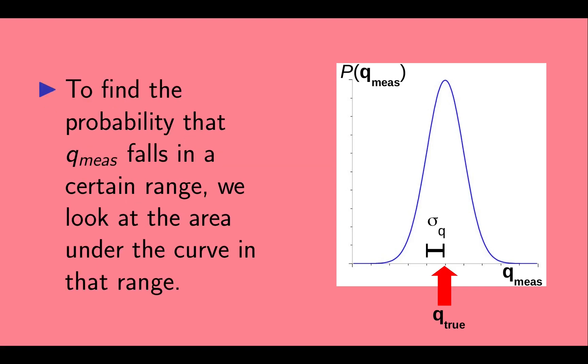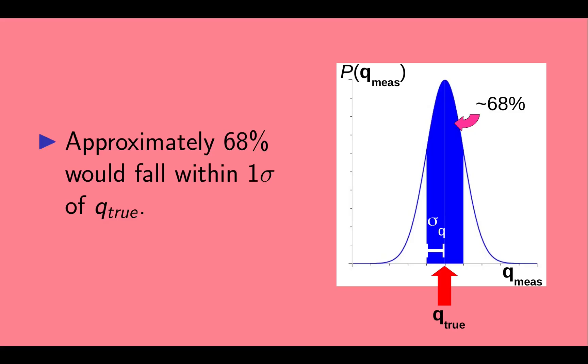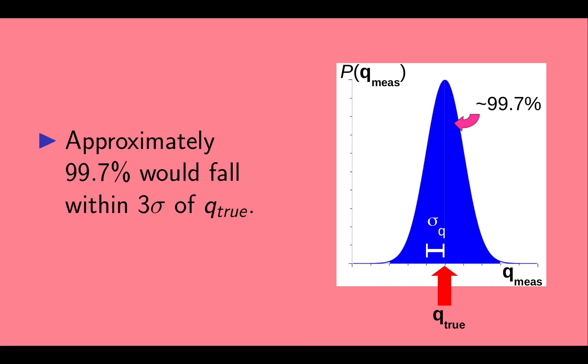To find the probability that q measured falls in a certain range, we look at the area under the curve in that range. On average, approximately 68% of measurements would have q measured fall within one sigma of q true. On average, approximately 95% of measurements would fall within two sigma of q true, and approximately 99.7% would fall within three sigma, on average.